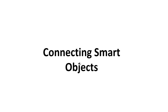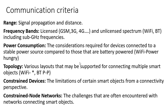In a smart object you have sensors, actuators, memory, and processing power. Adding a communication technology makes it a smart object, and the interconnection of such smart objects creates the Internet of Things. To connect smart objects you need a communication technology — examples include Bluetooth, Zigbee, Wi-Fi, Sigfox, and NFC. The criteria to consider when selecting a technology include range, frequency band, power consumption, topology, constrained devices, and constrained node networks.